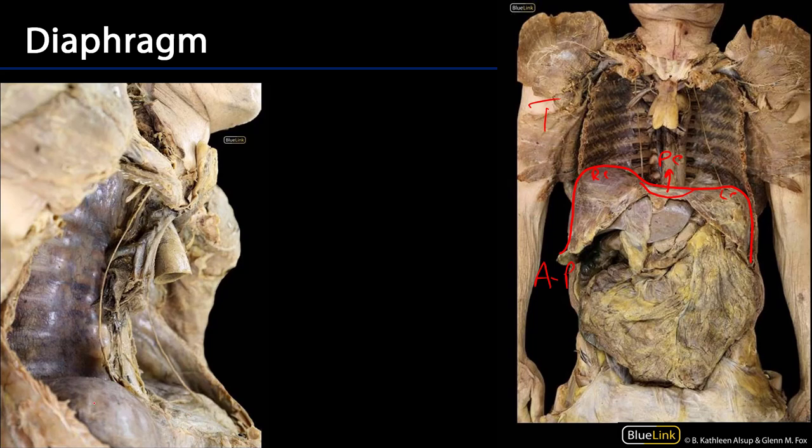In profile here we have a nice view of the right cupula as well as the left cupula, and we can see the right and left phrenic nerves descending down to serve those cupulae. So we've discussed the sternal angle, the phrenic nerves, and the diaphragm which the phrenic nerves serve. Thank you very much for your time.